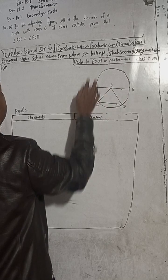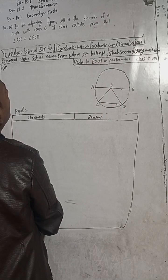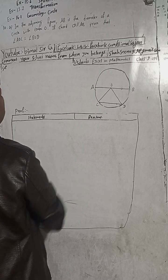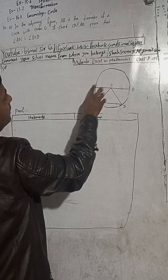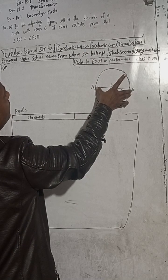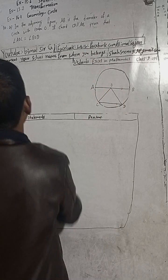Because passing through the center. And AB is the diameter of the circle with center O. If chord CD, CD chord, this CD chord is parallel to AB. Prove that. Now we have to write here, given.